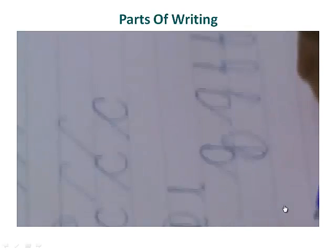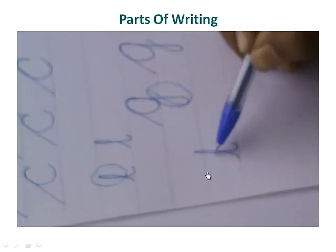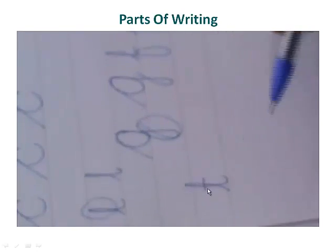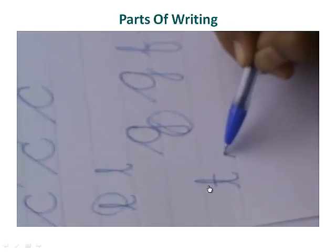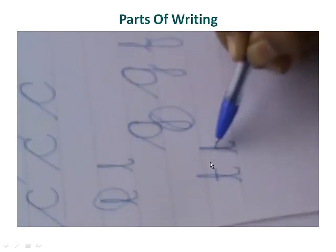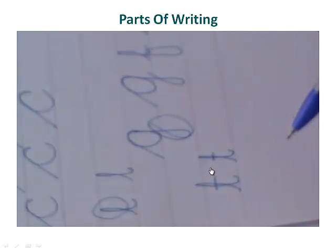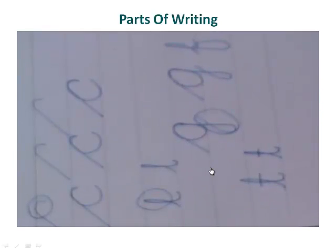Now the next one is known as the crossbar. Crossbar is the line which is drawn horizontally to cross a letter such as T. So that horizontal line which is drawn on T is known as the crossbar. Keeping these parts of the alphabet in mind, now we will start with the handwriting training process.